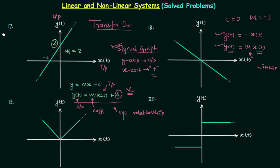Comparing problems 17 and 18: both have a straight line, but in problem 17 the line has a non-zero intercept, giving a constant added term, making the system non-linear. In problem 18 the intercept is 0, so the system is linear. The rule is: a straight line with non-zero intercept means non-linear; intercept equal to 0 means linear.